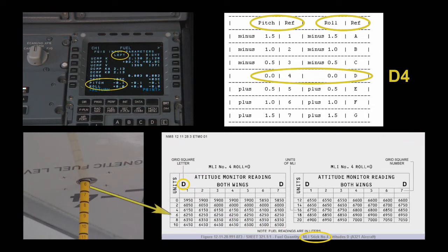Find the applicable MLI units number row and the applicable aircraft attitude row in the Aircraft Maintenance Manual table. Determine the intersection of the applicable rows to give the correct volume in the tank. Note: only even number MLI units are listed in the tables. For odd numbers, calculate the volume between the nearest even numbers in the Aircraft Maintenance Manual table.